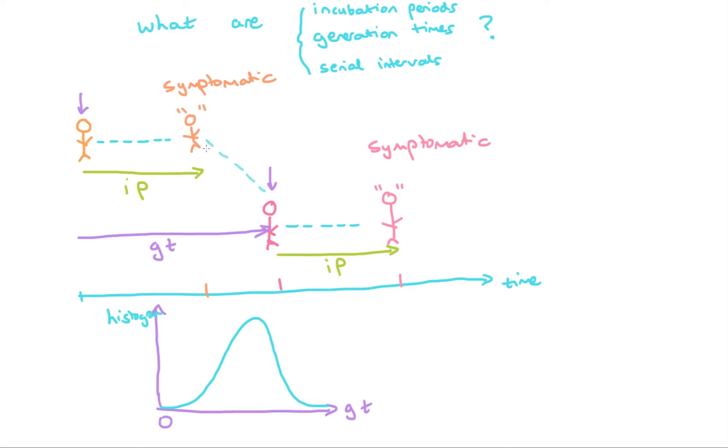Finally, we can define what is known as the serial interval. The serial interval is the amount of time that elapses when the primary person becomes symptomatic until the time at which the second person becomes symptomatic. Here we have a serial interval that looks something like this.